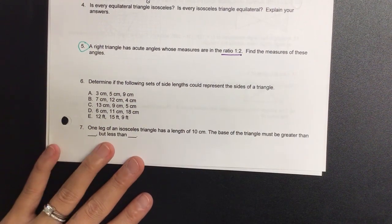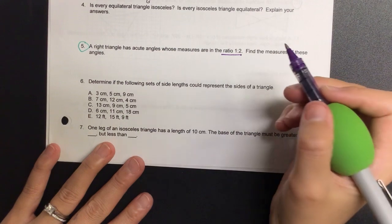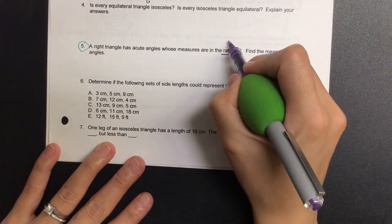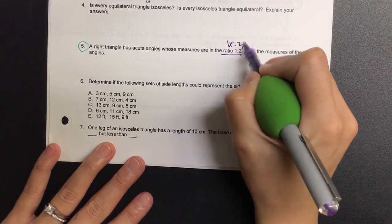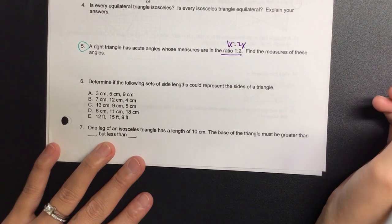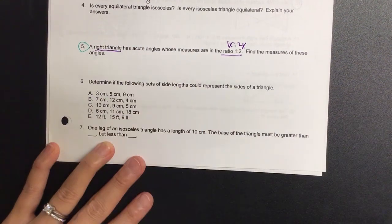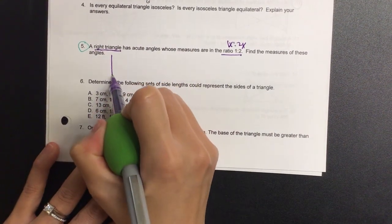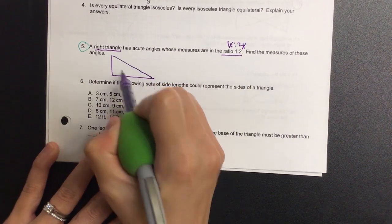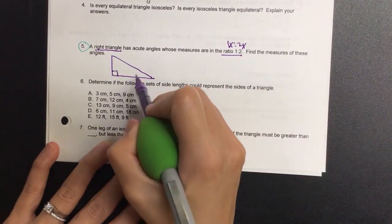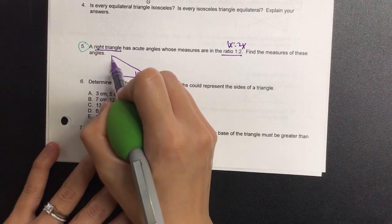So when you see the word ratio, it means we have a common variable. So that means we have 1x to 2x. Since I know it's got to be a right triangle, an acute angle is in a right triangle. So in a right triangle, we have 90 degrees. This right here is an acute, 1x and 2x.